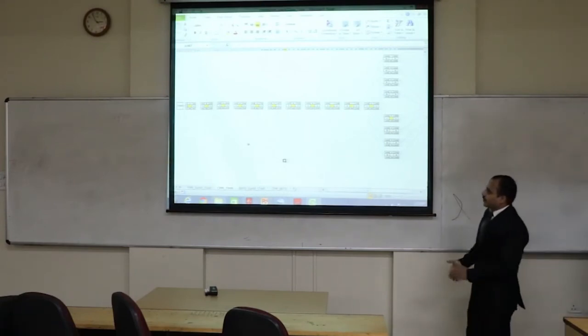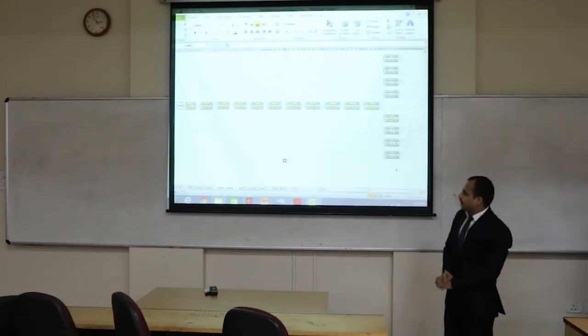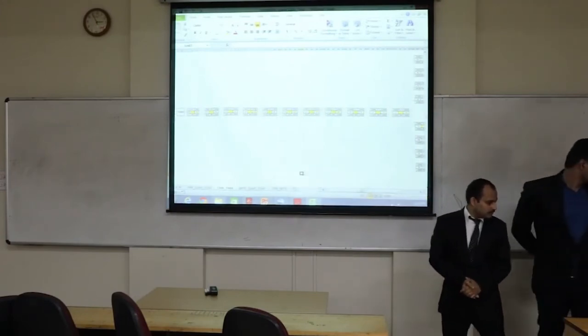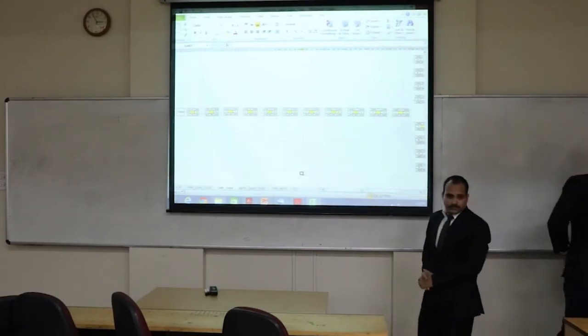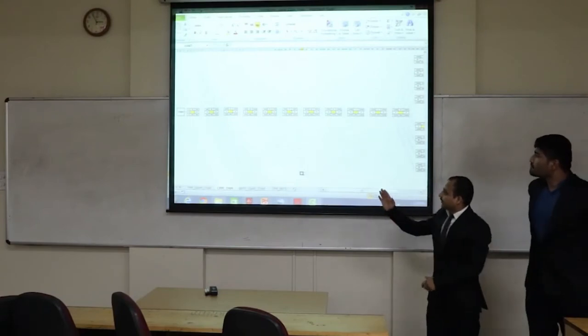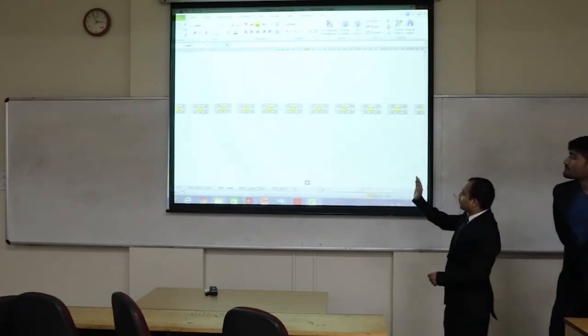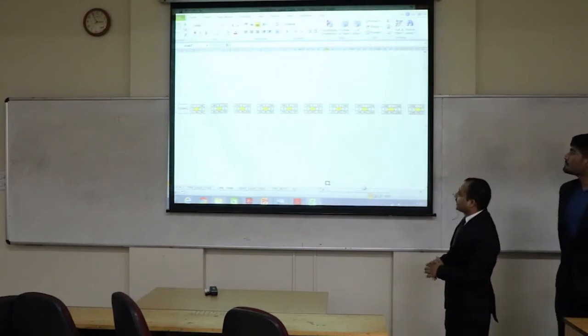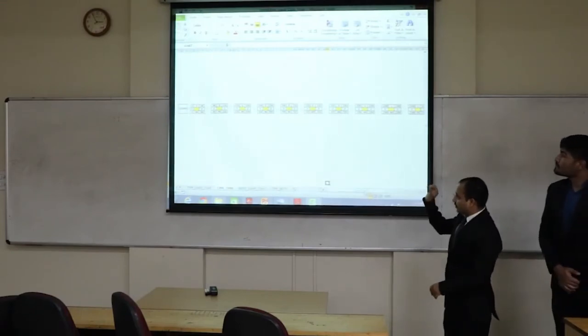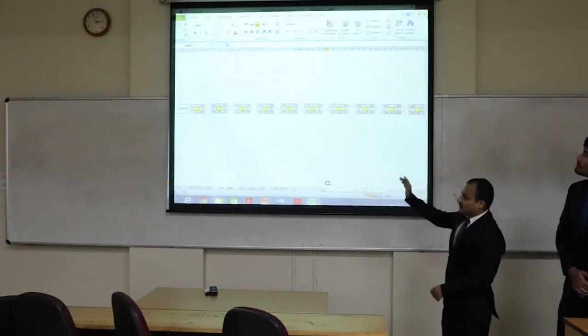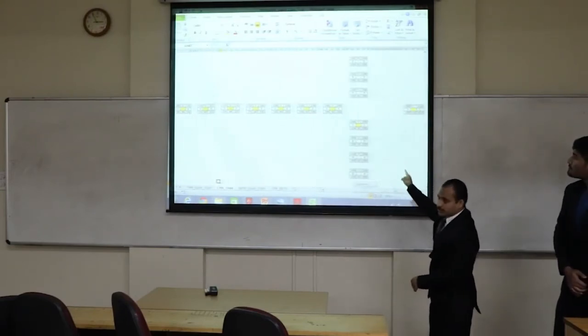We have made this network diagram with all the work breakdown structures. All the activities of work breakdown structures have been converted into different units and then each time is given for each activity and accordingly we found our critical path method as shown by yellow dots.